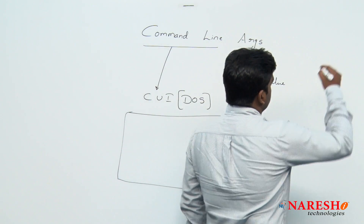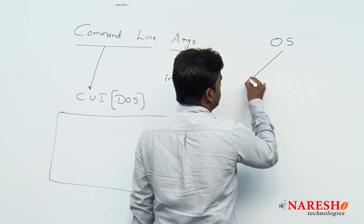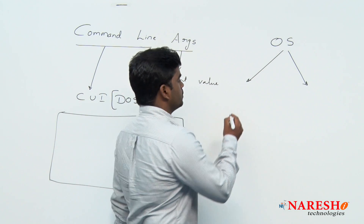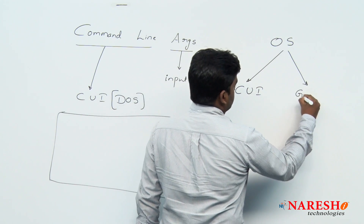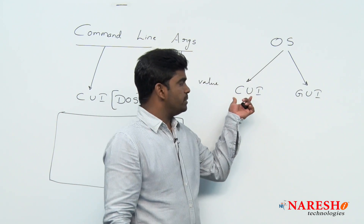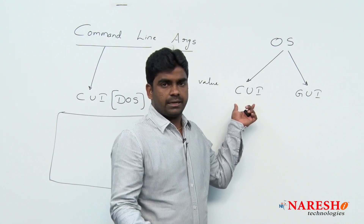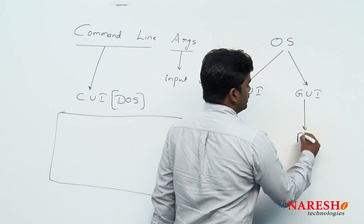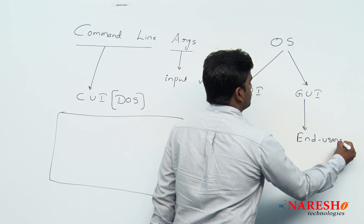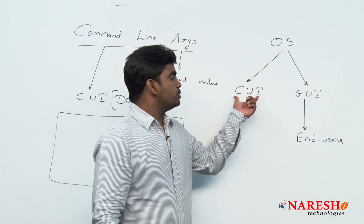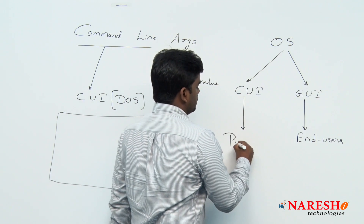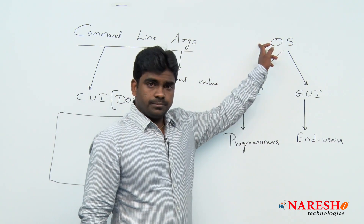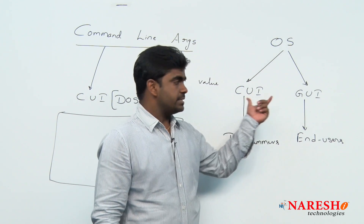Generally, whenever we install any operating system on your computer, two types of operating systems will be installed — for example on Windows: one is CUI and the second one is GUI. CUI means command user interface or character user interface; GUI is graphical user interface. Mostly end users will use the graphical user interface, and programmers will use the character user interface.